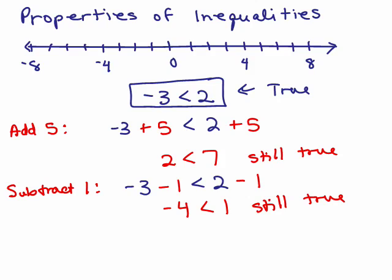It looks like we can add or subtract any number to both sides. If you start with negative 3 less than 2 and add 5, each one moves 5 to the right, so they're still in the same relative position. Same for subtracting 1 — both numbers move 1 to the left and remain 5 spaces apart. So adding or subtracting the same number to both sides still preserves the inequality — it's still a true statement.